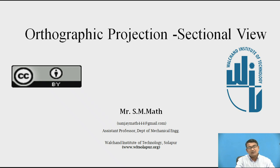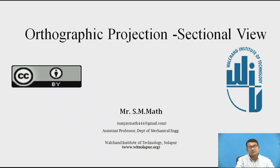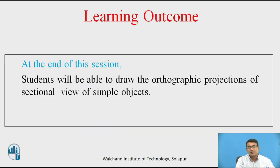Today I am explaining through this video the orthographic projections. In orthographic projections, the next step is the sectional view we have to draw. Why is the sectional view required? Because some surfaces are hidden — they do not directly come to the surface. When these surfaces are not shown, that part of the object is not clear. That is why you have to go for sections. The basic learning outcome is that the student will be able to draw the orthographic projections of a sectional view of a simple object.